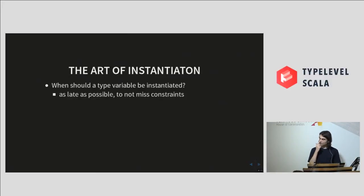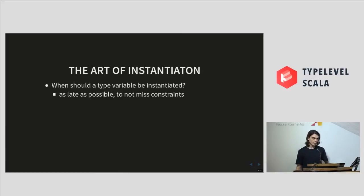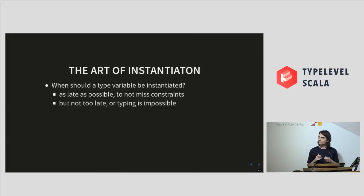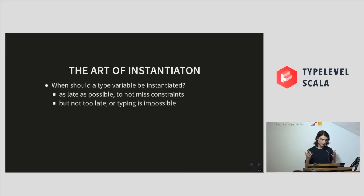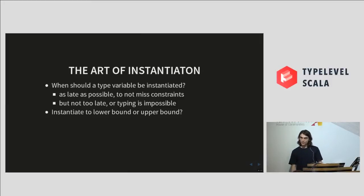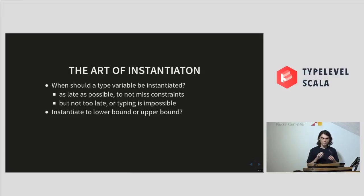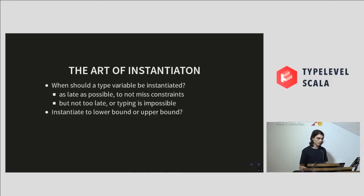The way it works in Dotty is that we instantiate type variables as late as possible — otherwise we might miss further constraints on these type variables and our program might not type-check. But we cannot delay instantiating type variables forever, otherwise we cannot type our program. The second question is that in most interesting cases, the lower bound and upper bound of your type variables are different, so you need to pick one to instantiate your type variable.